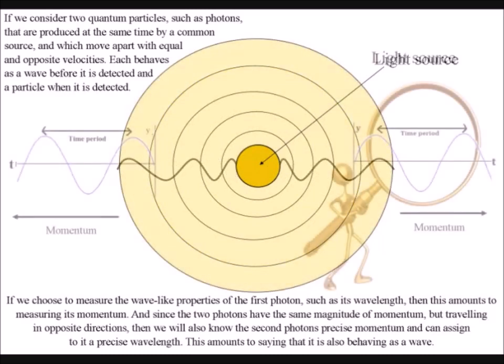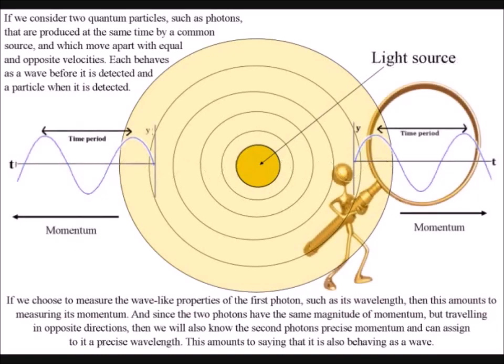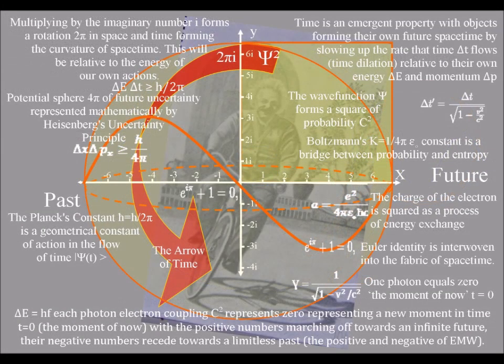In this theory, the light waves only move forward direction because we have an uncertain future continuously coming into existence with the exchange of light photon energy forming new spherical waves of probability.